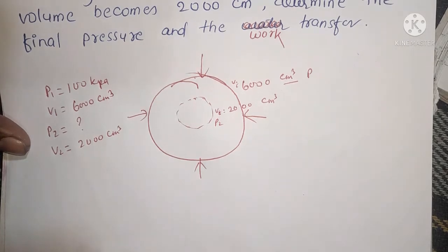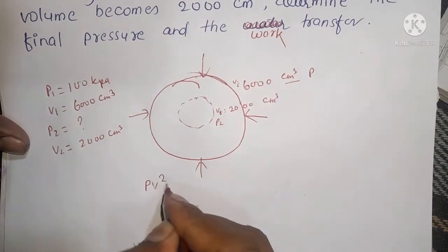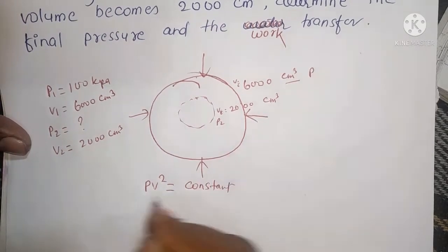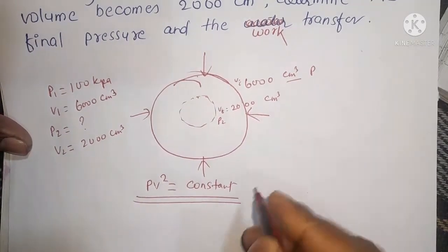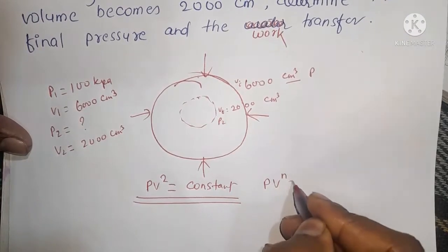We need to find work when gas pressure and volume are related by PV² = constant. This means it is a polytrophic process where PV^n = C and n equals 2.